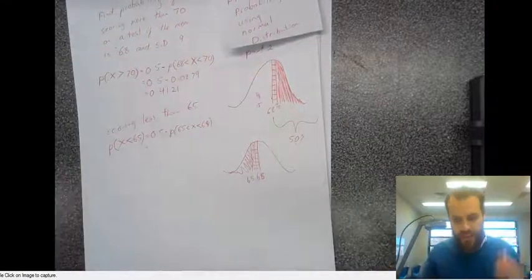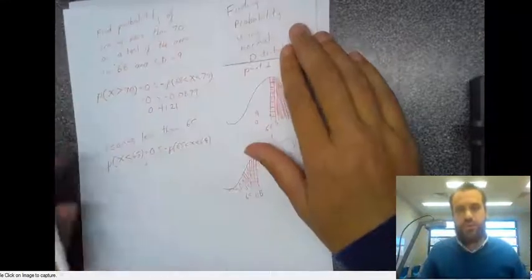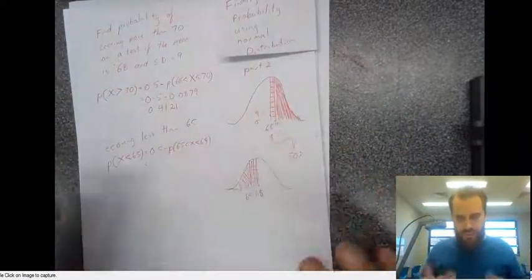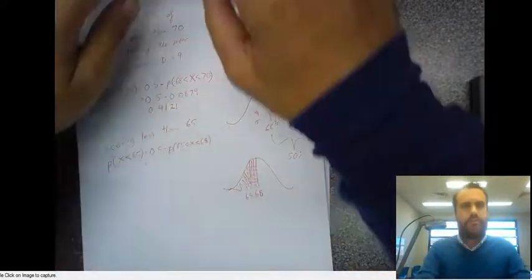All right, that's it. That's finding probability using normal distribution part two. There's one more slight thing to come, but this is probably the more difficult bit.